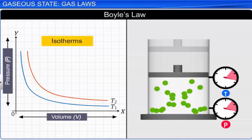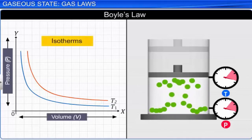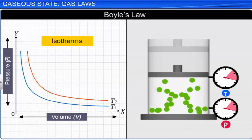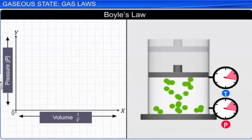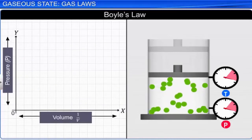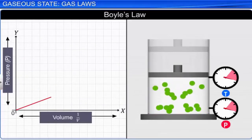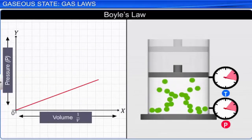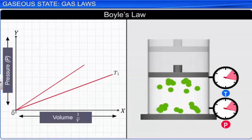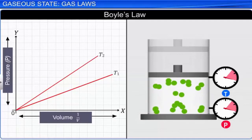From this we can conclude that each pressure versus volume curve corresponds to a different constant temperature for a given amount of gas. These curves are known as isotherms. Similarly, we can plot the variation of pressure against one divided by volume, and we get a straight line for each constant temperature. These straight lines pass through the origin.